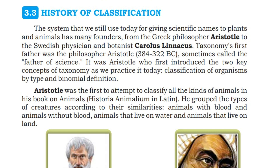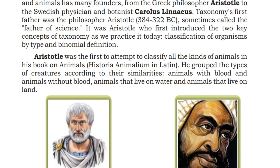The classification of organisms by type and binomial definition — these were the first concepts of taxonomy that he introduced. Aristotle was the first to attempt to classify all the kinds of animals in his book on animals, Historia Animalium in Latin.